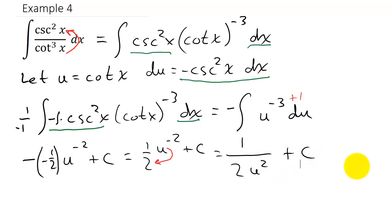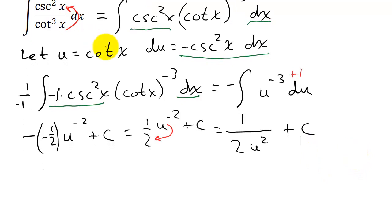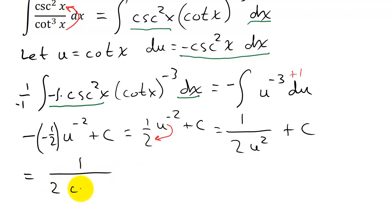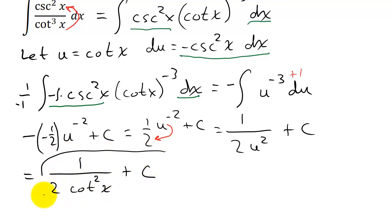I need to get my answer back in terms of x, so in place of u I put cotangent x. That gives me 1 over 2 cotangent squared x plus c. And there's our answer. That's all for this video — I hope it helped, and hope you'll check out my other videos. Thanks.